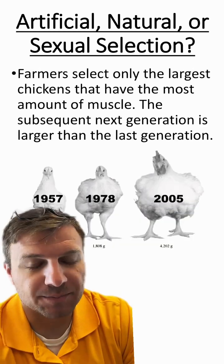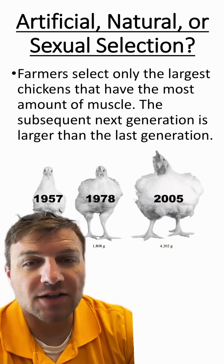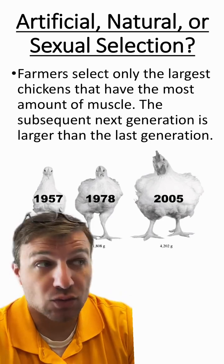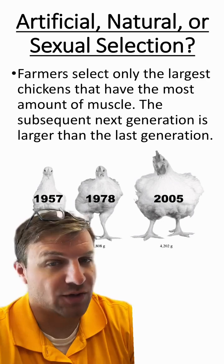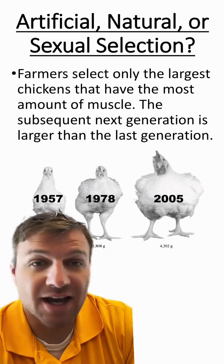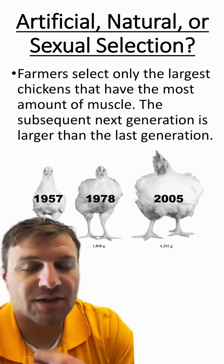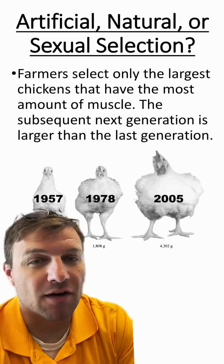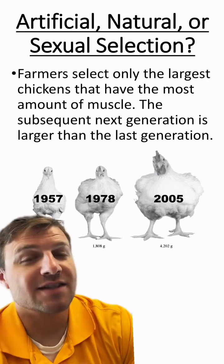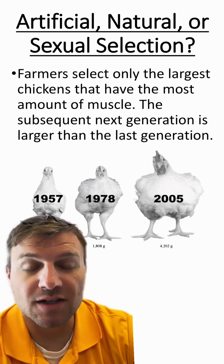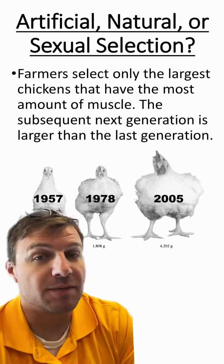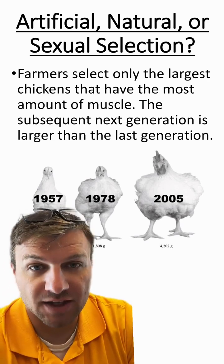Here's our next one. Farmers select only the largest chickens that have the most amount of muscles to reproduce in the next generation. The subsequent generation is then larger than the last generation. So is this a type of artificial, natural, or sexual selection? Since humans are selecting which organisms mate and reproduce, this is going to be artificial selection.